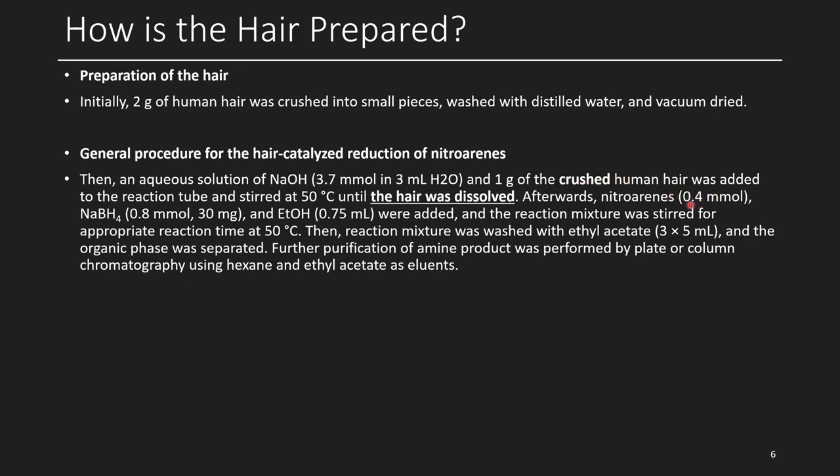Afterwards, the nitrobenzenes that they were looking at with sodium borohydride and ethanol were added, and the reaction mixture was stirred for the appropriate reaction time at 50°C. Then, the reaction mixture was washed with ethyl acetate, three times five milliliters, and the organic phase was separated. Further purification of the amine product was performed by plate or column chromatography using hexane and ethyl acetate as eluents. This is just a standard run-of-the-mill procedure, no major red flags.